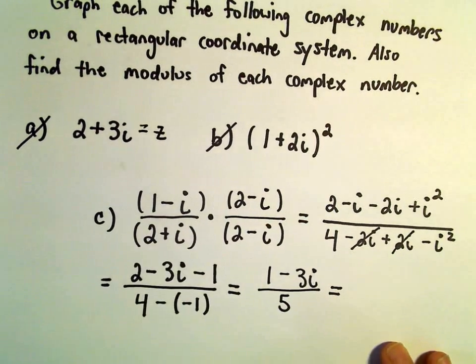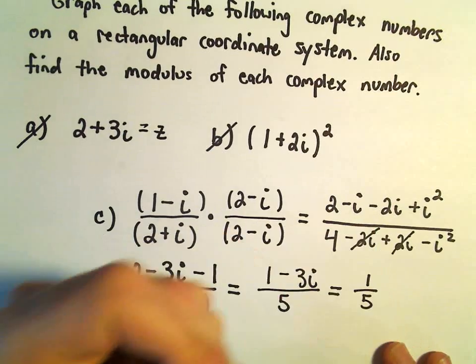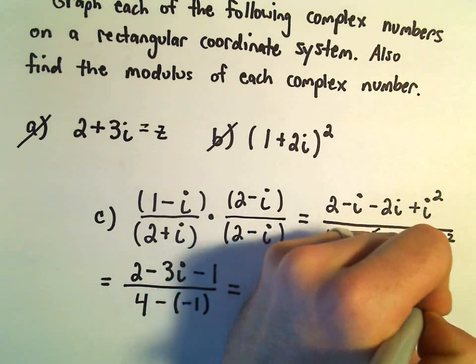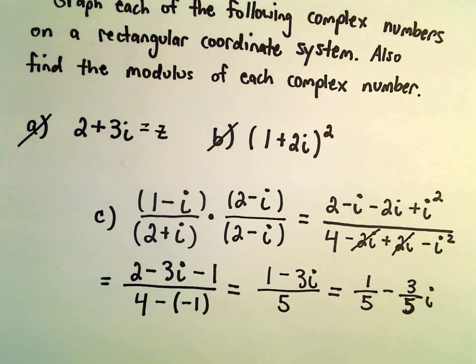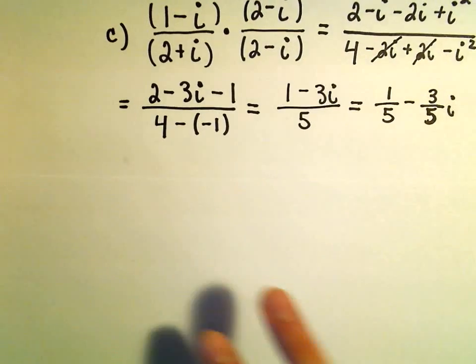And we can now rewrite this as 1 fifth minus 3 fifths times i. So now, by doing all this, I've got it written as a more recognizable complex number.